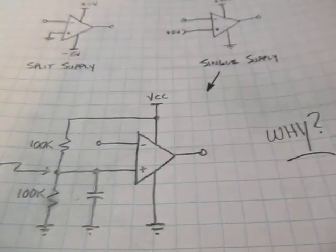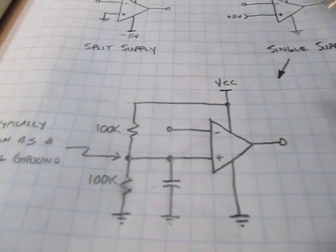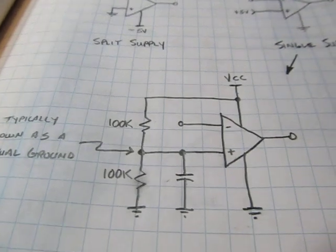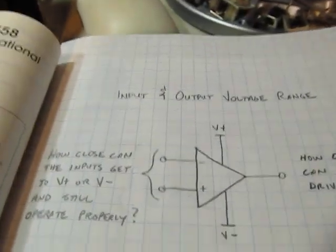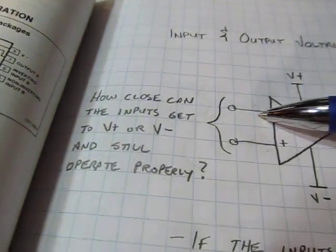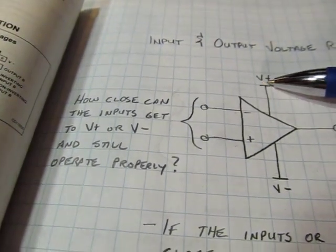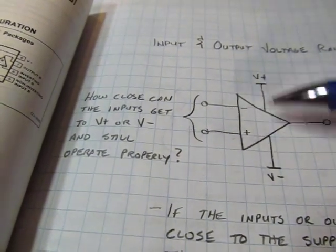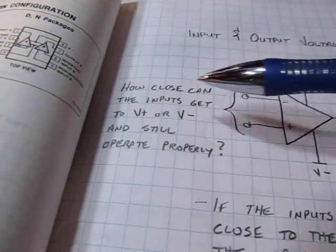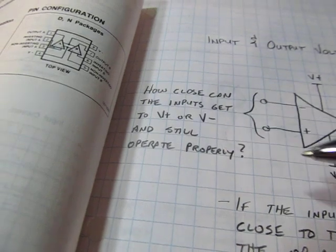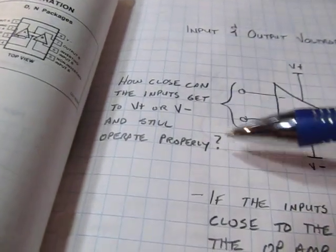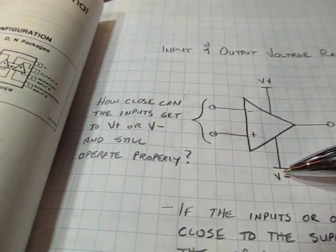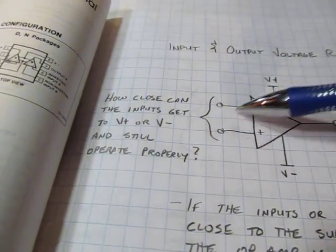So why do we care about this, and why can't we just simply operate all op-amps this way? One of the reasons is that traditionally op-amps, when they were designed, didn't have the ability for the inputs to get all the way, or be driven near the positive supply or near the negative supply. You typically had to have a couple of volts between where these inputs are and the positive or negative supply rails. So the first question you have to ask is, how close can the inputs get to V-plus or V-minus and still operate properly?